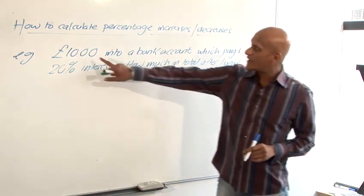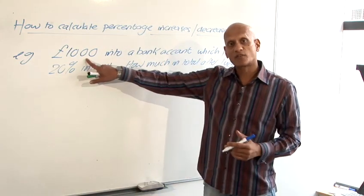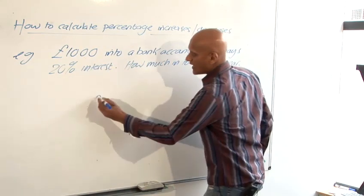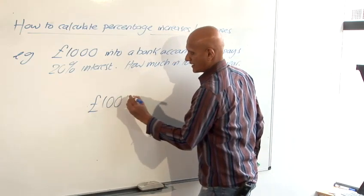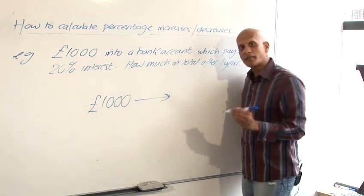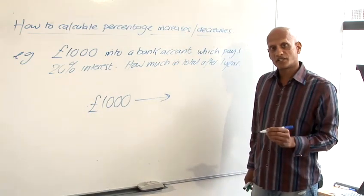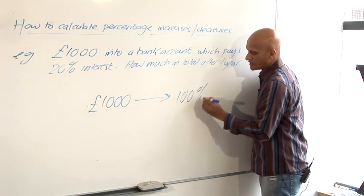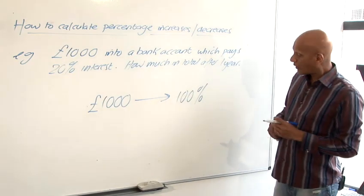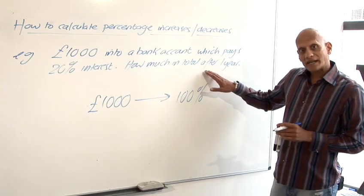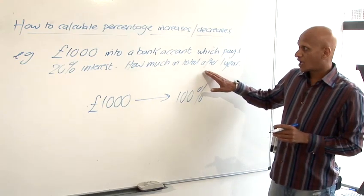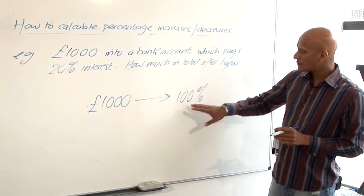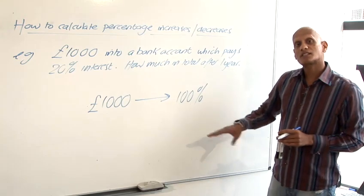So the thousand pounds is what we've put into the bank account to start off with. So that's our original amount. A thousand pounds is the original amount. Now the original amount is always assigned a percentage of 100%. So the original amount, a thousand pounds is 100%. Now the bank is going to add 20% to that so at the end of it we're going to have the 100% of the original amount we had plus the 20% on top.